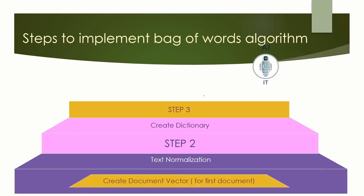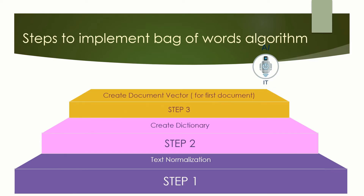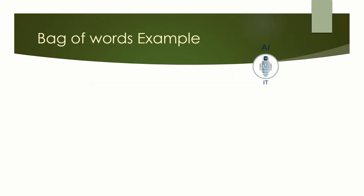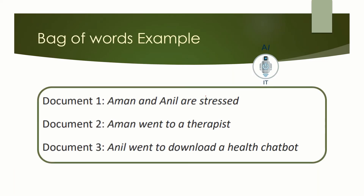The third step is to create a document vector, and this is only for the first document. The fourth step is to create the document vectors for all the documents. Let us understand these four steps in detail. Let me assume that I have three documents. The first document says Aman and Anil are stressed. The second document says Aman went to a therapist. And the third document says Anil went to download a health chatbot.